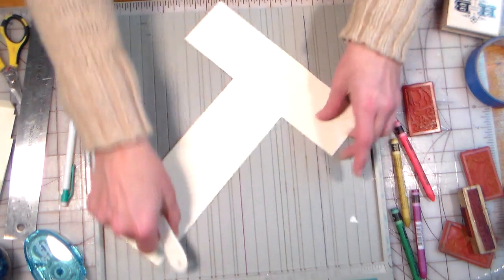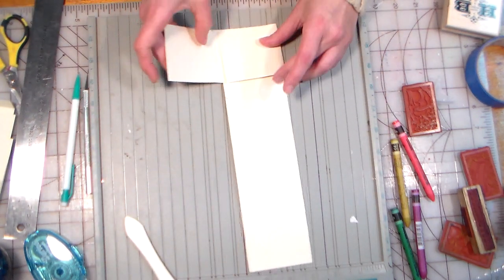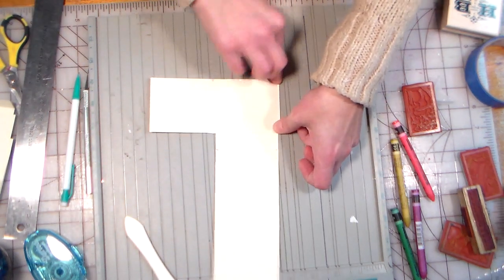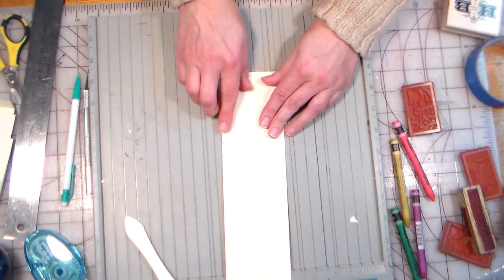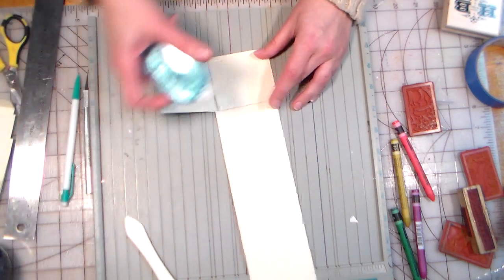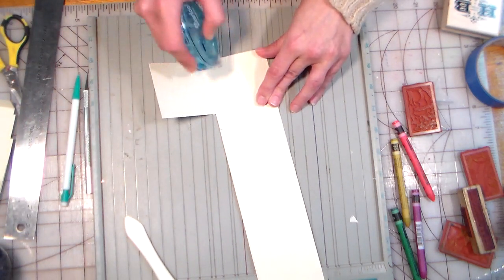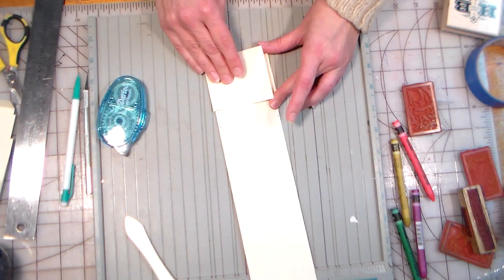and then what you do is you fold in these two panels, the two arms of the tee, give it a little glue, glue it down there,